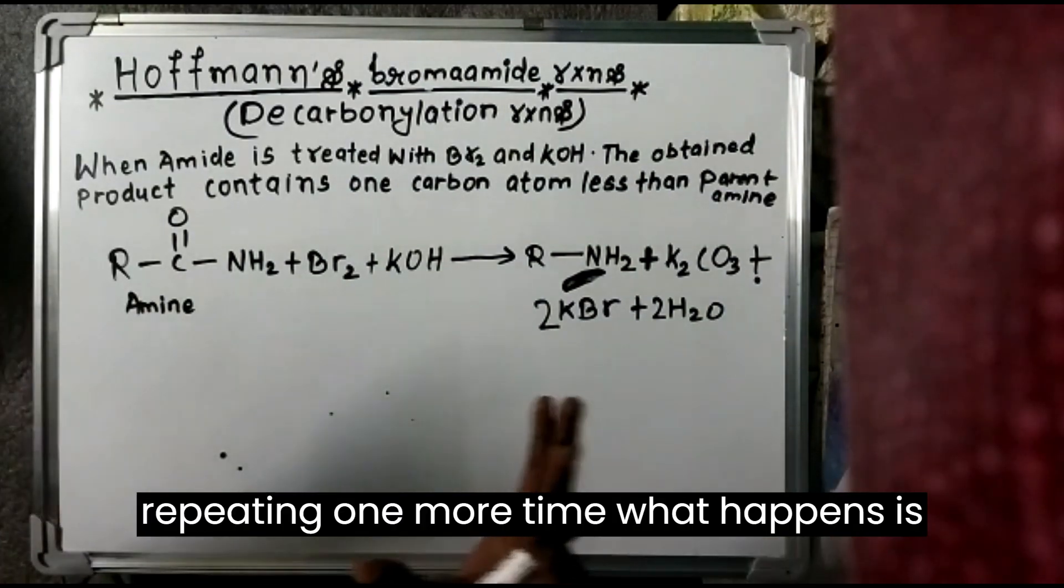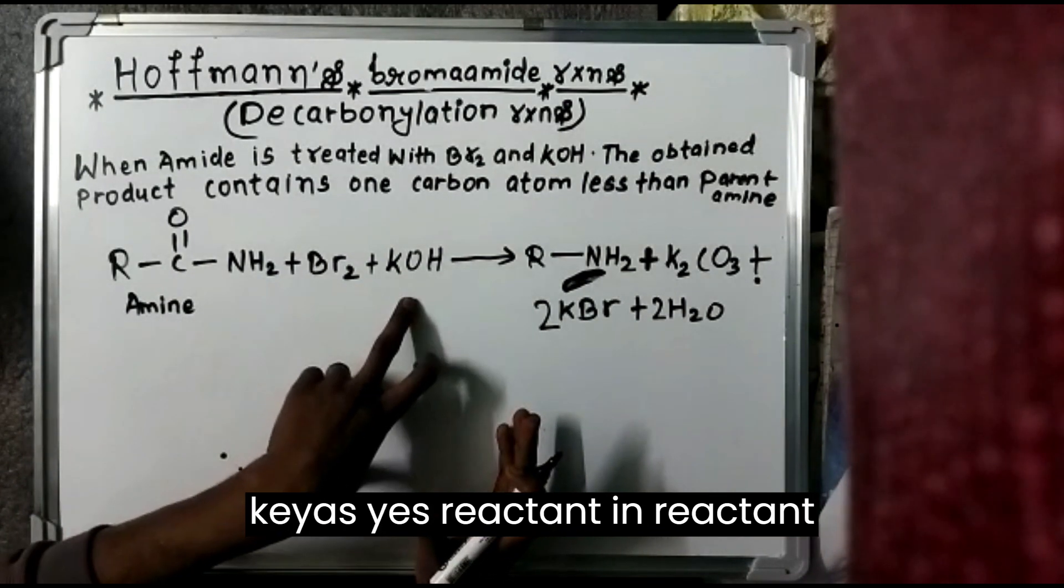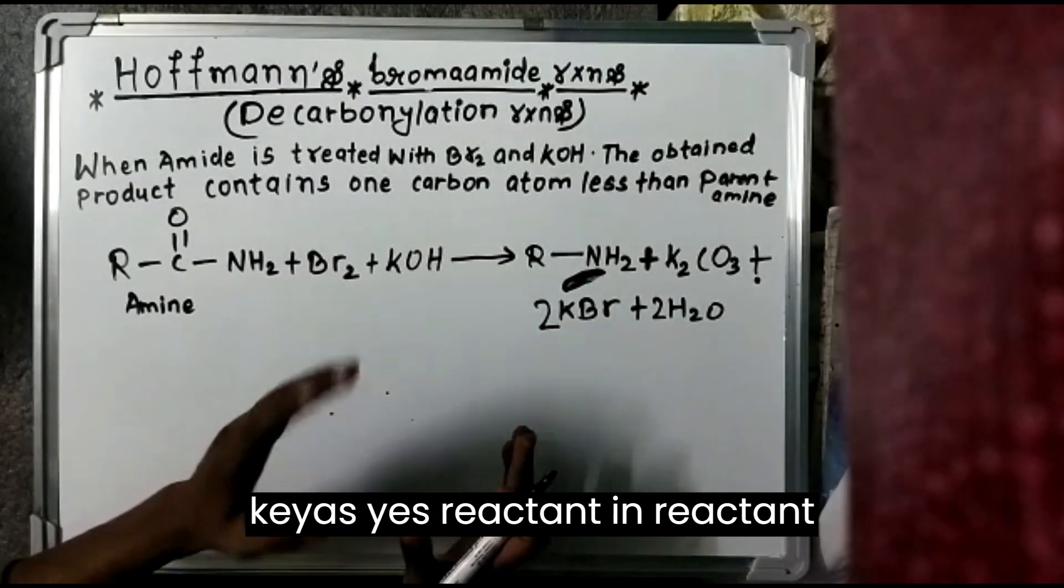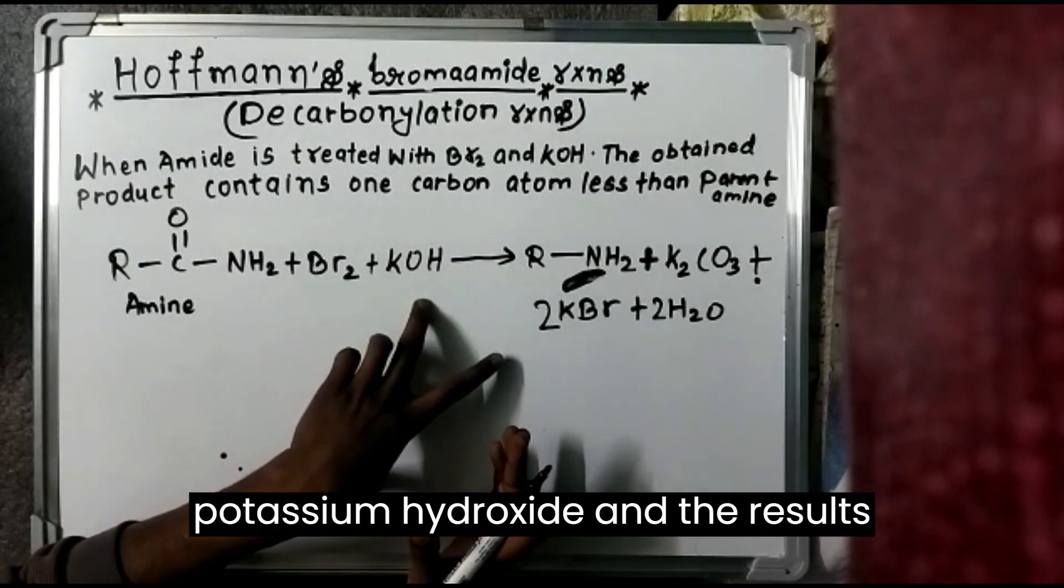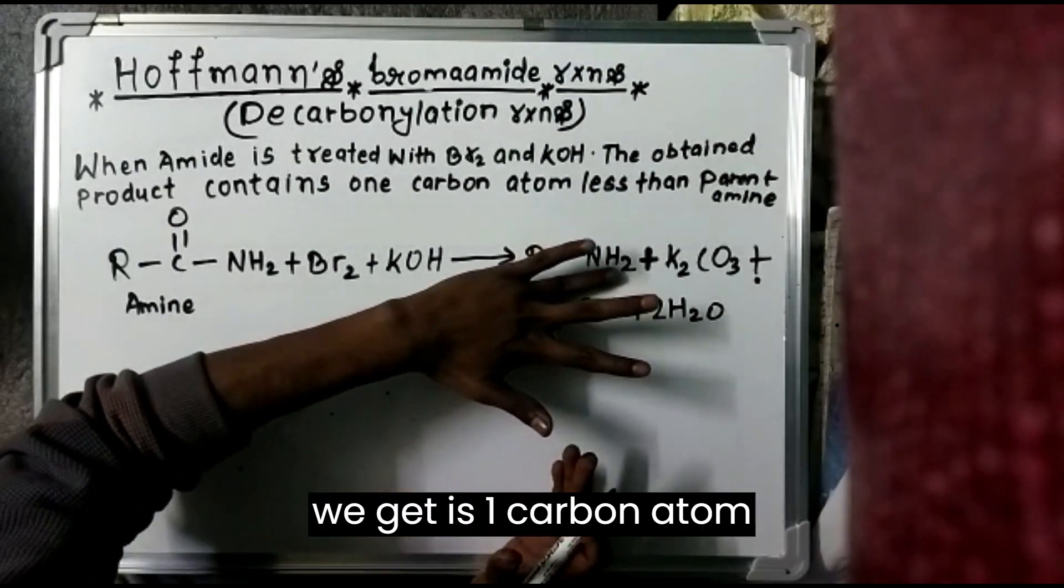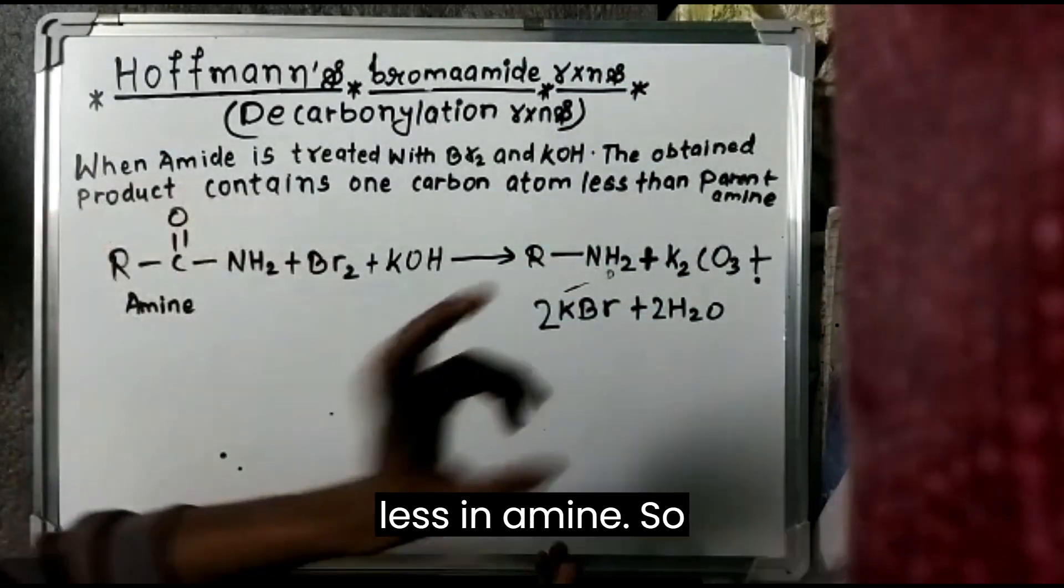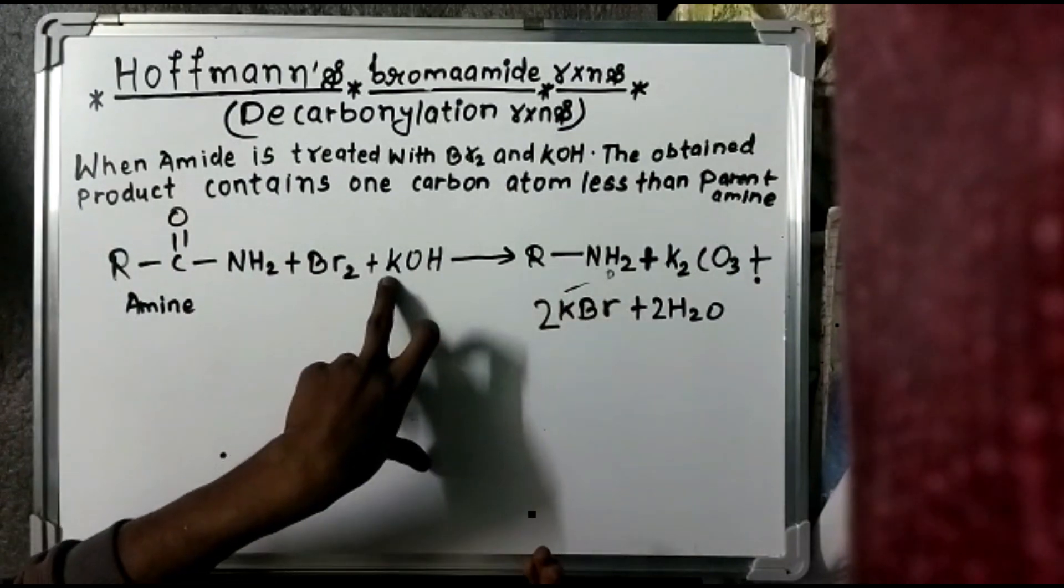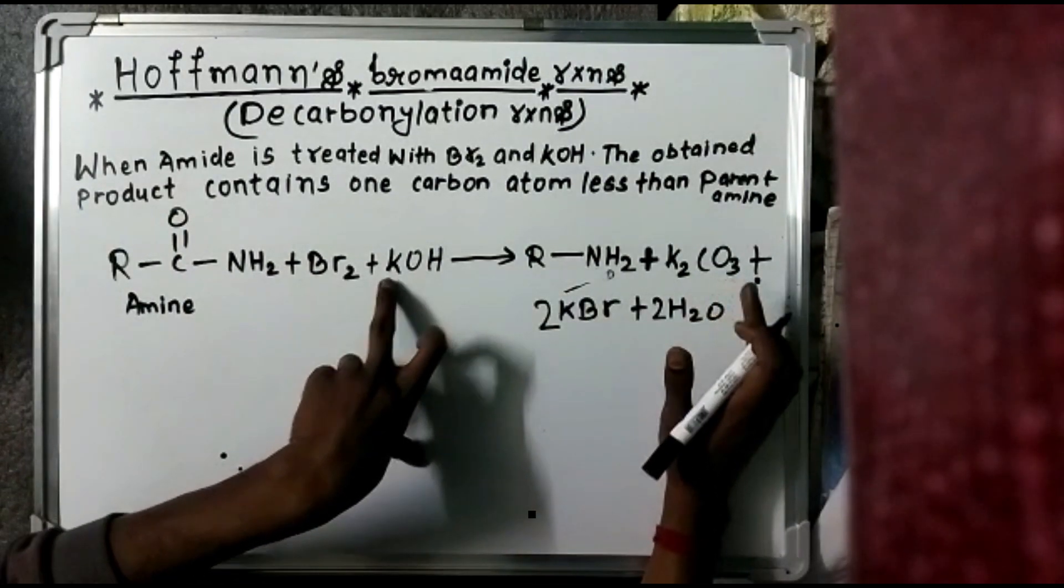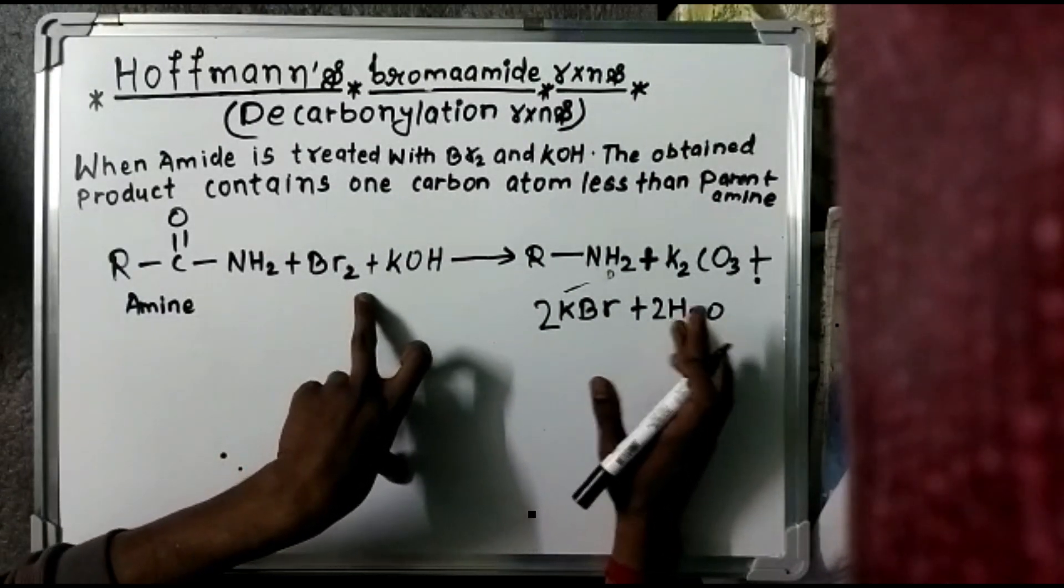I'm repeating one more time. What happens is amine reacts with bromine and KOH on the reactant side. And the results we get is one carbon atom less than amine. So R-NH2 and K2CO3 and KBr plus 2H2O water releases.